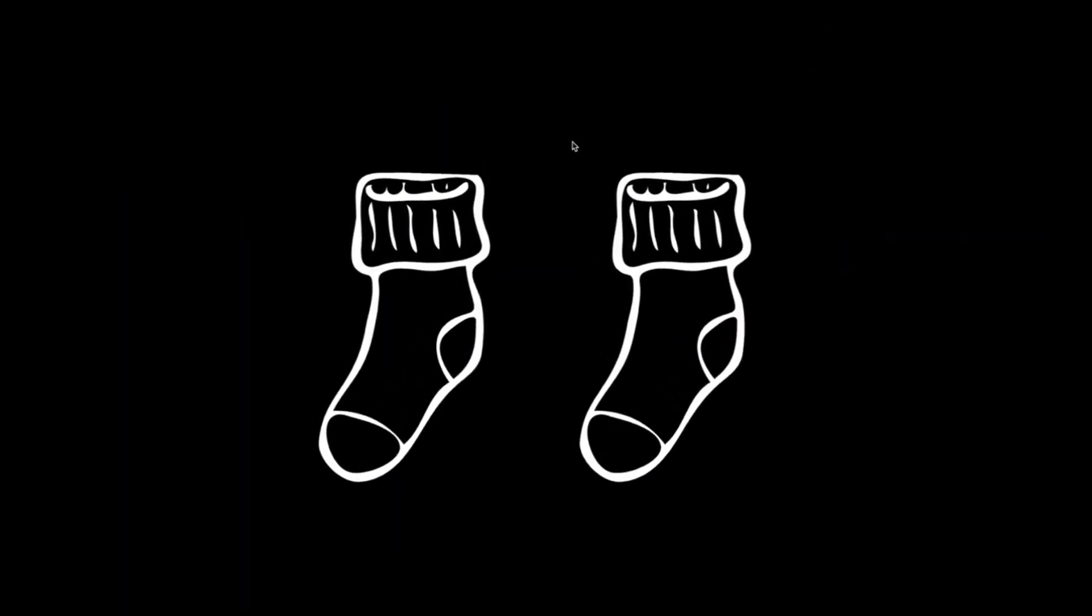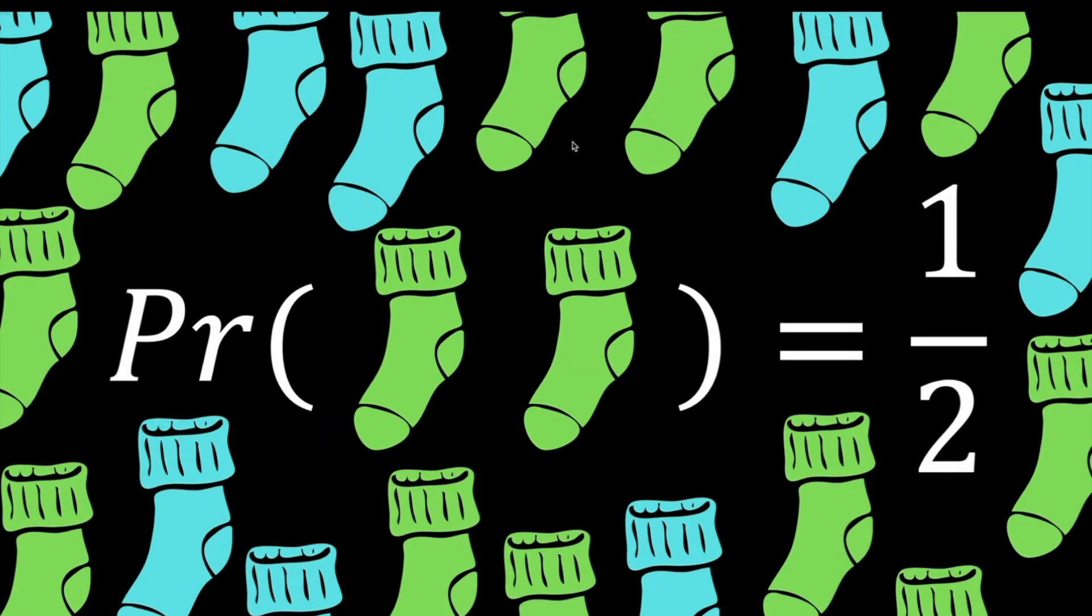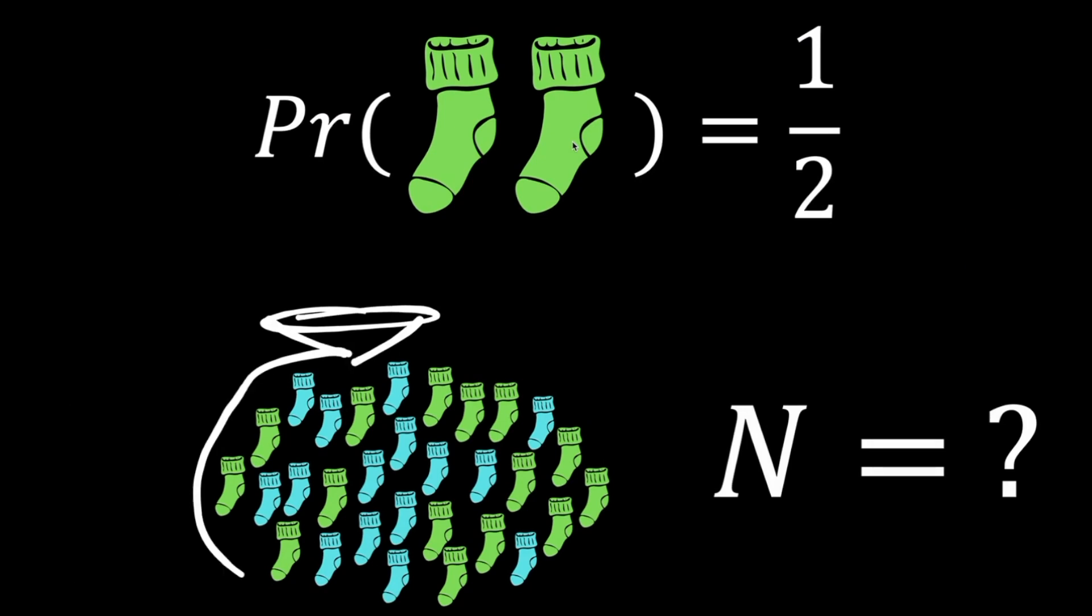The bag contains n socks. Some are blue, some are green. If two random socks are picked one after the other, the probability that they are both green is 1 over 2. What is the smallest possible value of n for which this is possible?